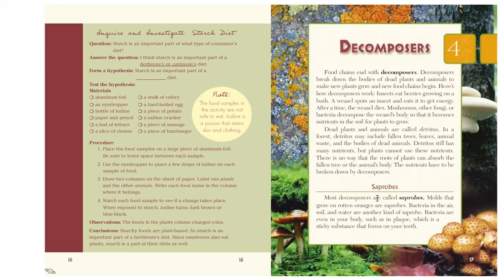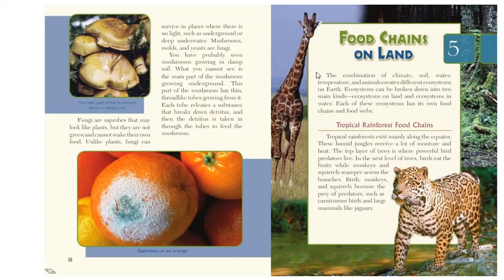Most decomposers are called saprobes. Molds that grow on rotten oranges are saprobes. Bacteria in the air, soil, and water are another kind of saprobe — bacteria are even in your body, such as in plaque, the sticky substance that forms on your teeth. Fungi or mushrooms are saprobes that may look like plants, but they are not green and cannot make their own food. Unlike plants, fungi can survive in places where there is no light, such as underground or deep underwater. Mushrooms, molds, and yeasts are fungi.